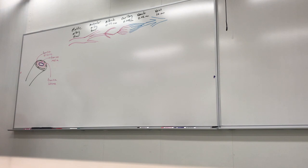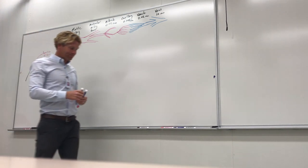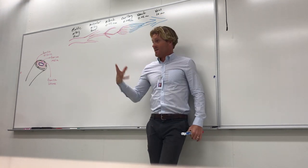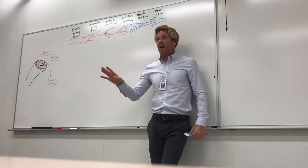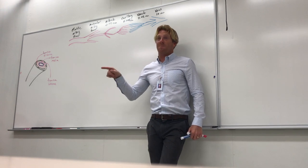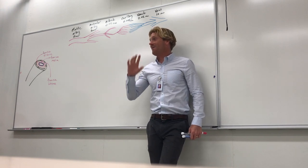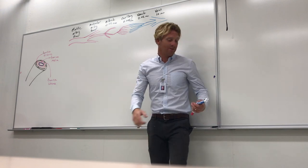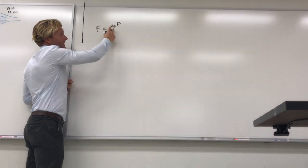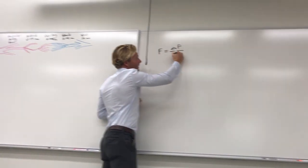Now we need to talk about a little bit of math to discuss how blood moves through a system of vessels. If the equations help you, great — use them. If not, just memorize the take-home messages. The first equation is: F = ΔP / R, where F is blood flow, ΔP is the change (difference) in pressure, and R is resistance.